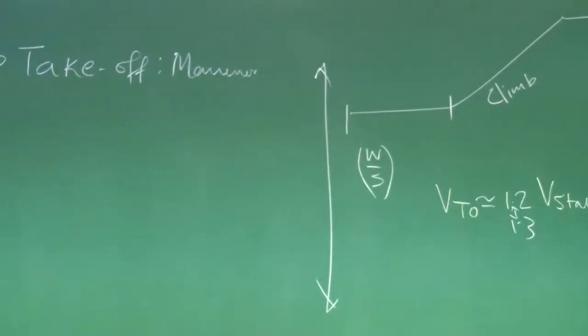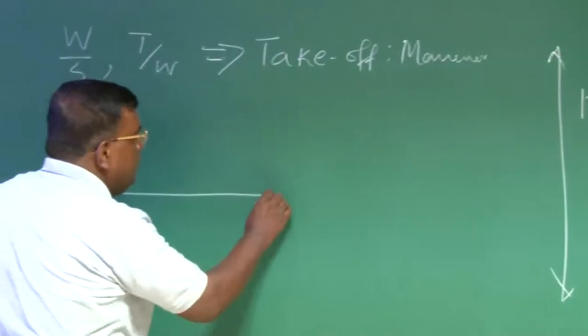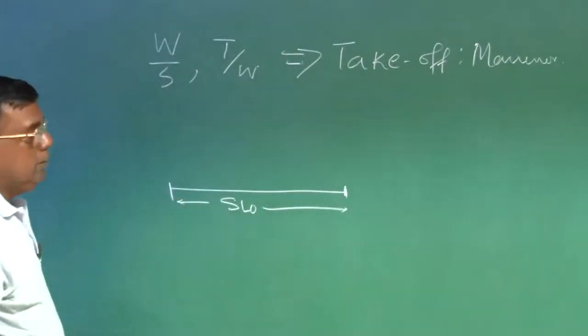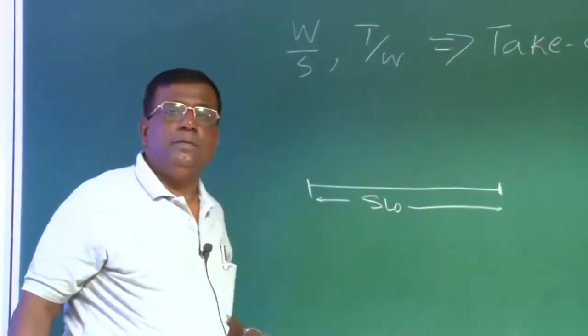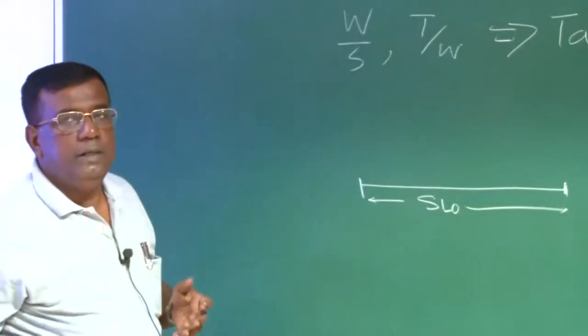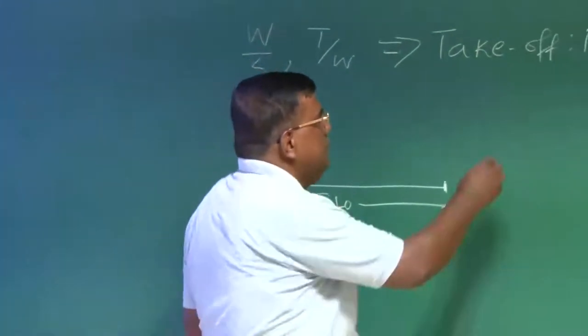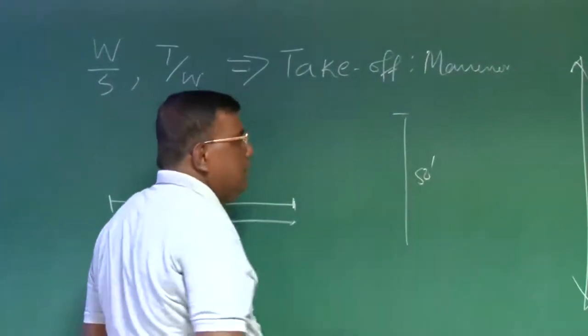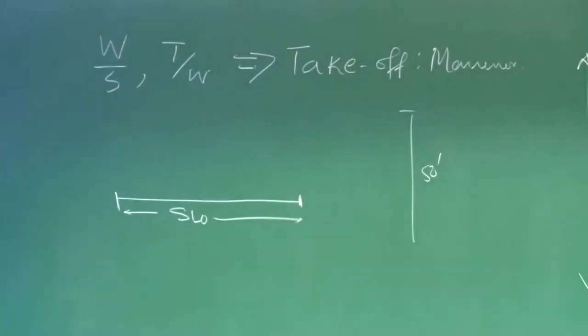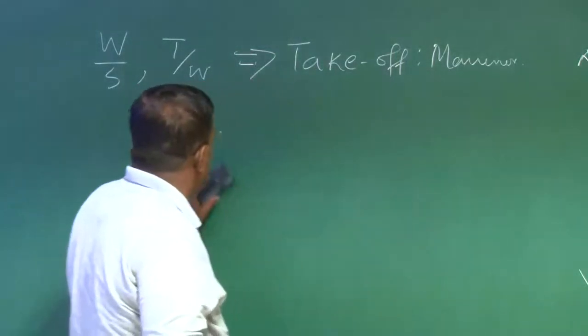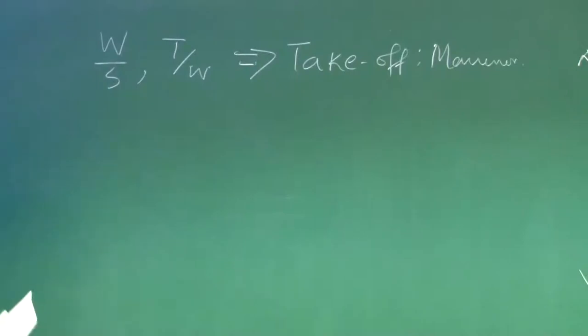This is a quick look on V stall, but when I come for takeoff, for a designer, he looks for what is that distance I require to ensure that, after that it has enough speed and if it rolls up like this, you should be able to go for a takeoff and as per the definition, you should clear 50 feet height, that is as per the regulations.